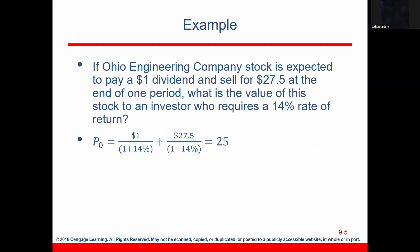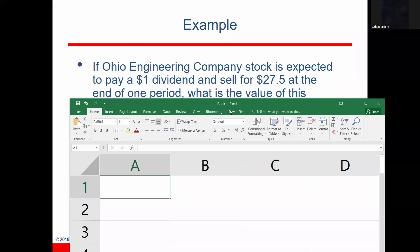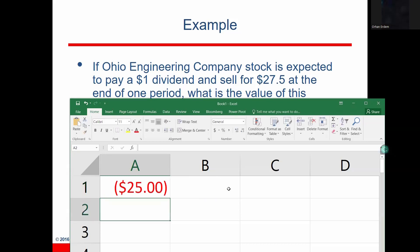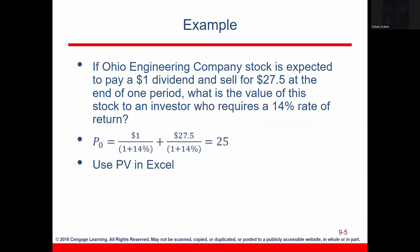Alternatively, we can use an Excel sheet to calculate this $25. In Excel we use the PV function: rate is 14%, NPER (number of periods) is 1, PMT (periodic payment, i.e., dividends) is $1, and FV (future value, the expected selling price) is $27.50. When you close the parenthesis and hit enter, it gives you $25 in red — meaning it's a cash outflow, i.e., what you pay. So $25 is the answer.